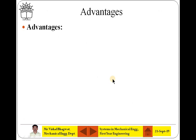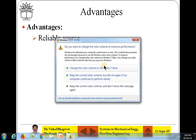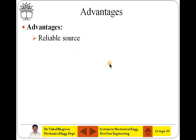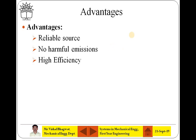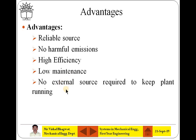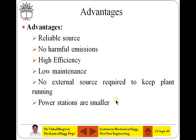Next, we will see the advantages of binary cycle geothermal power plant. First, it is a reliable source. Then it has no harmful emissions. It has very high efficiency. It has very low maintenance. No external source required to keep the plant running. Power stations are smaller and those are at specific locations only, which is becoming one of the disadvantages actually.